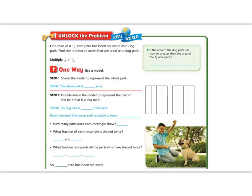Alright, 5th graders, let's begin this lesson by reading the Unlock the Problem. One third of a 1¼ acre park has been set aside as a dog park. Find the number of acres that are used as the dog park. Reading in the green box, is the area of the dog park going to be less than or greater than the area of the 1¼ acre park? Well, remember, if we're multiplying by less than one, one third is less than one, then our answer is going to be less than what we multiply by. Let's show this in a model and then let's get down to the numbers.